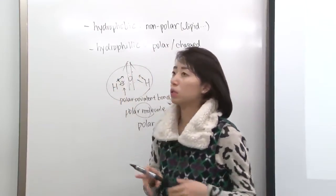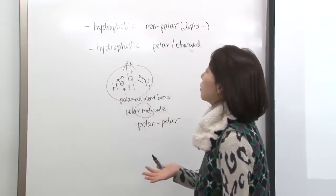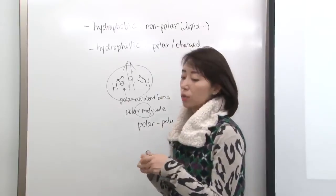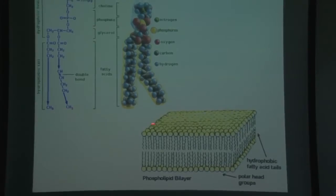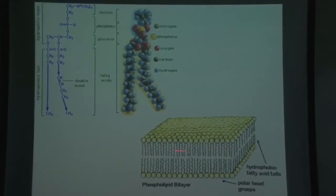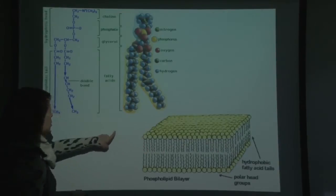Let's briefly look at the phospholipid that makes up your cell membrane. This whole thing is a cell membrane, and if you magnify the membrane, it is made up of individual lipid molecules. One lipid molecule is the phospholipid. Phospholipid is very special because the top part is actually hydrophilic.